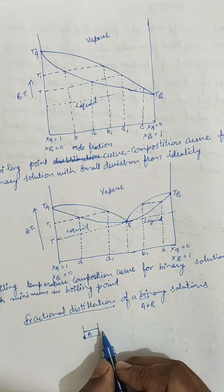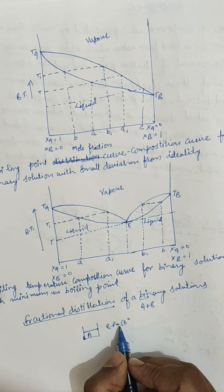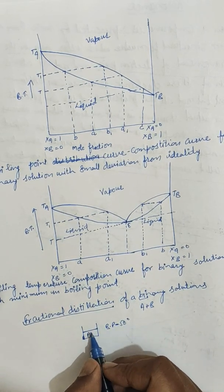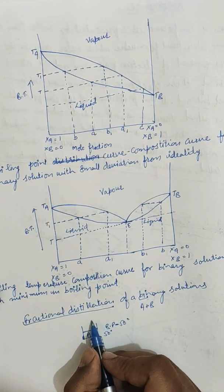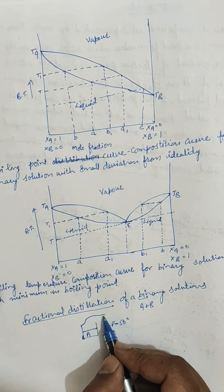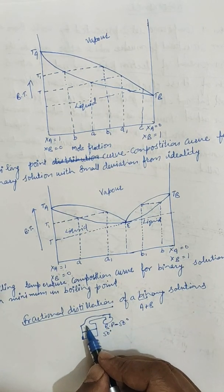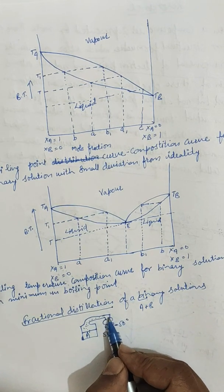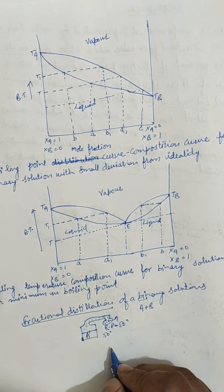Fractional distillation means when you heat a pure liquid A whose boiling point is, suppose, 50 degrees, at 50 degrees it starts converting from liquid to vapor state. When that temperature is reached, this component will start vaporizing, and you can collect it by putting an apparatus elsewhere — the vapor moves and you cool it to collect pure liquid A again.